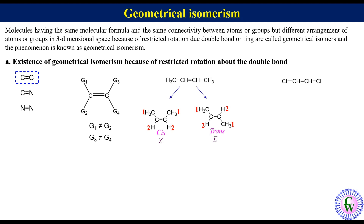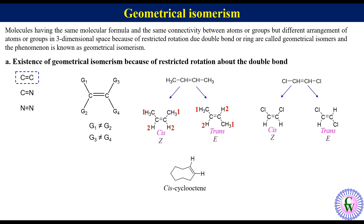Similarly, 1,2-dichloroethylene has two isomers: one with two chlorine atoms on one side and two H atoms on the other side of the double bond, called the cis form or Z; and the other with similar groups on opposite sides of the double bond, called the trans form or E. Cycloalkenes with an 8-carbon ring or greater have stable geometrical isomers. For example, cyclooctene has two geometrical isomers: cis-cyclooctene and trans-cyclooctene.